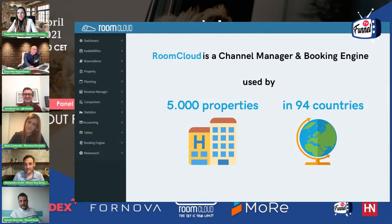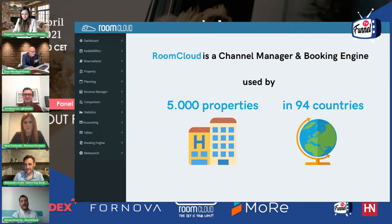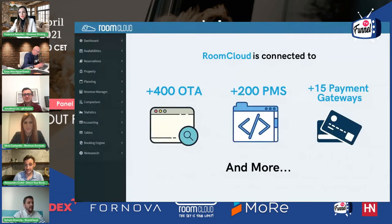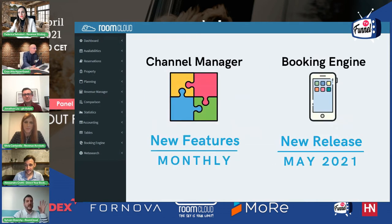Let's start with RoomCloud. RoomCloud is a channel manager and booking engine used by 5000 properties in 95 countries. The channel manager and booking engine is quite a common tool now, but still essential for mainly hotels and revenue managers. We are connected to more than 400 OTAs and more than 200 PMS, more than 50 payment gateways and more softwares.